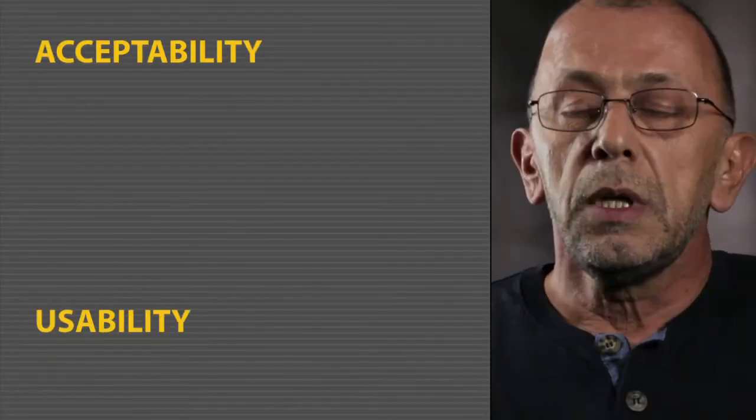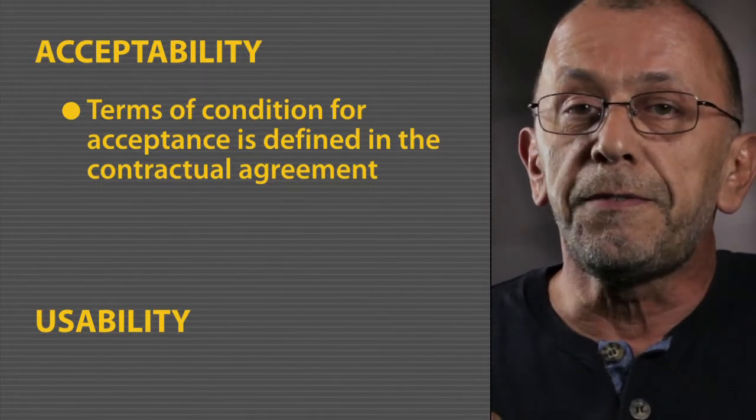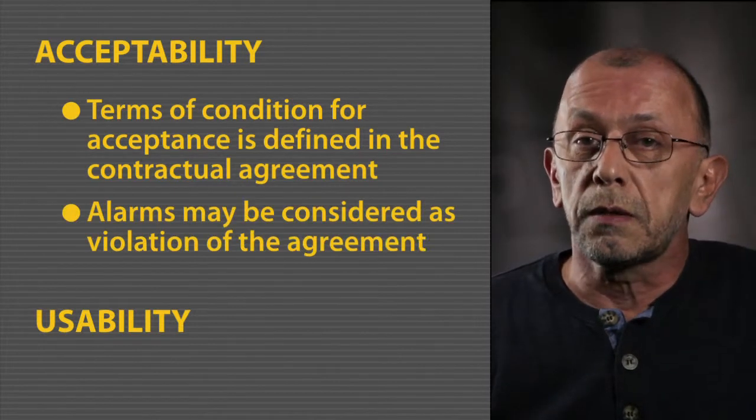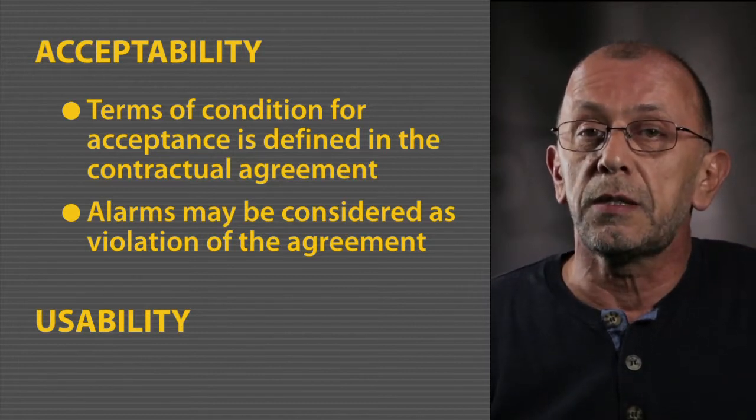You may ask why we are rejecting a shipment while the VVM still indicates a usable vaccine. To answer this, we have to look at two important terminologies: acceptability and usability. In all international shipments, the procurement agency signs an agreement with the shipper or manufacturer defining the terms of transport and the temperature range. An alarm could be considered a violation of the contractual agreement, and legally the recipient may reject the shipment — no matter the VVM indicates a good-to-use state. Sometimes WHO receives complaints from countries claiming that the VVM's color changed in the international shipment, or even reached stage two, with no alarm in electronic shipping indicators.